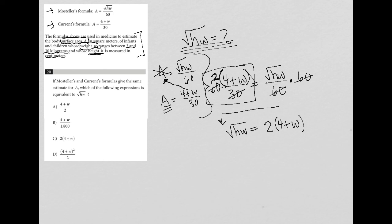So that's what I get. Square root of HW equals 2 times 4 plus W. I look to my answer choices and it looks like I have a matching answer here at choice C.